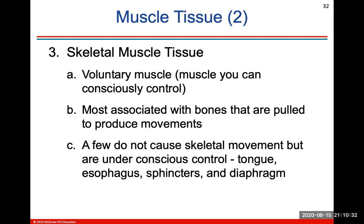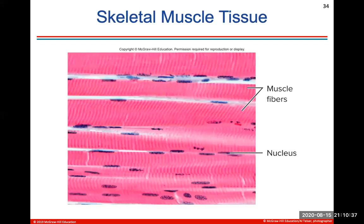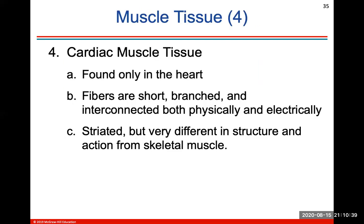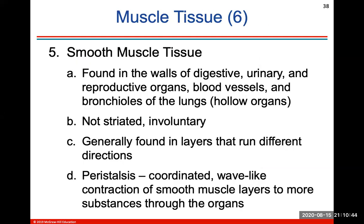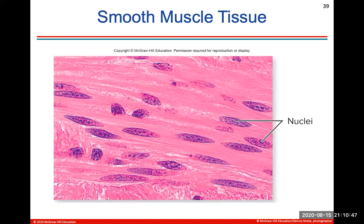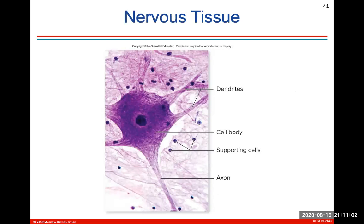These slides take you through a review of skeletal muscle tissue, cardiac muscle tissue, and smooth muscle tissue with pictures of each — that's a review from anatomy. Nerve tissue is found in the brain, spinal cord, and nerves. Neurons are made of dendrites, axons, and the cell body. Neural glial cells are supporting cells. There's a picture of nerve tissue showing the dendrites, cell body, and axon.